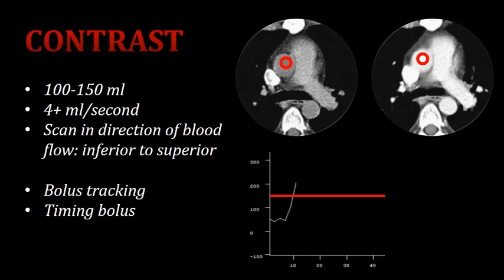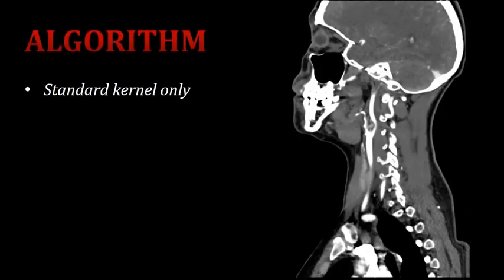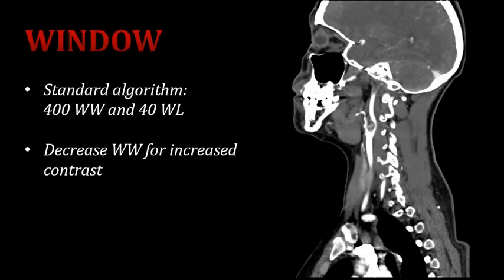Since we are looking at blood vessels, the only algorithm that we need to use to reconstruct these images is the standard kernel only. We're really not looking at bones, so there's no need to perform a bone algorithm reconstruction. Just the standard algorithm will do. And of course, if we're reconstructing in the standard algorithm, we'd want to view these images with the traditional standard algorithm window width and window level, which is a 400 window width and a 40 window level.